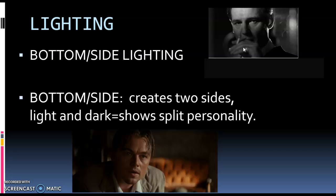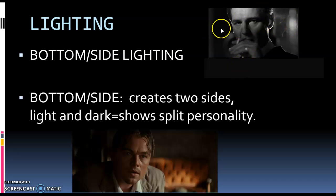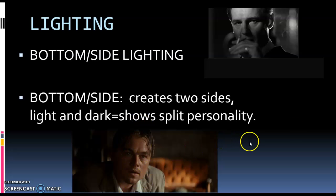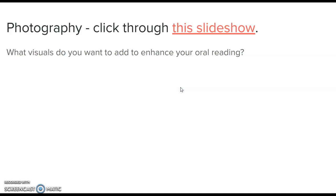You could also do what's called bottom side lighting, where you take a lamp or some type of light source and put it off to the side so it creates a shadow — like a split personality. This is from Schindler's List: he's a Nazi so he's got dark shadows on him, but he's also helping Jewish people so he's light on the other side. And this is from Shutter Island — he has a split personality situation, so that makes sense.